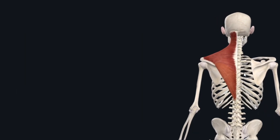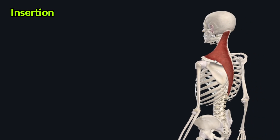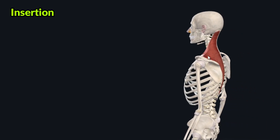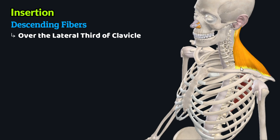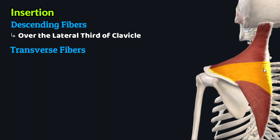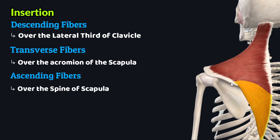These three groups of fibers insert over different areas on the clavicle and the scapula. The descending or superior group inserts over the lateral third of the clavicle. The transverse or middle group inserts over the acromion of the scapula, while the ascending or inferior group inserts over the spine of the scapula.